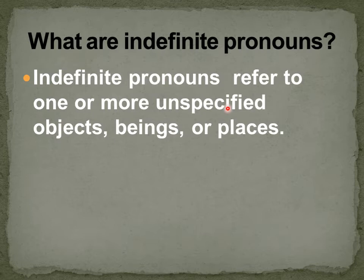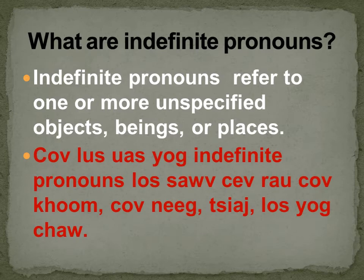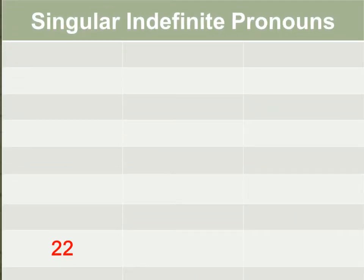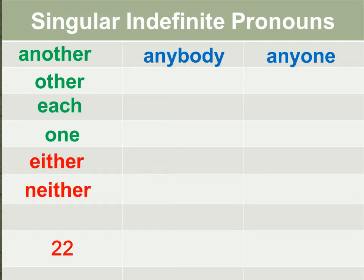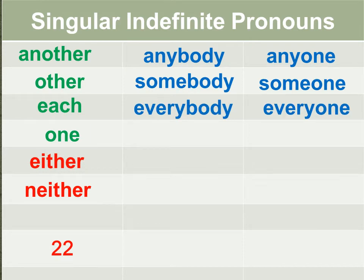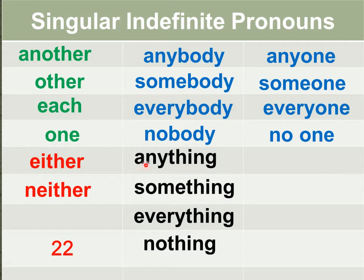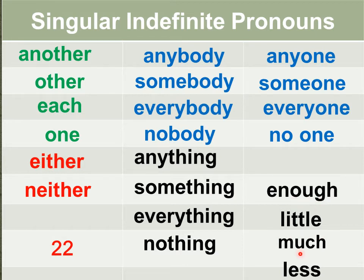Indefinite pronouns refer to one or more unspecified objects, beings, or places. The singular indefinite pronouns are: another, other, each, one, either, neither, anybody, anyone, somebody, someone, everybody, everyone, nobody, no one, anything, something, everything, nothing, enough, little, much, less.